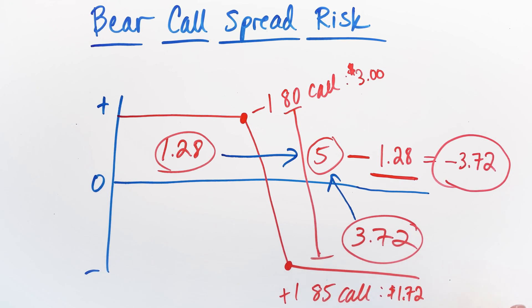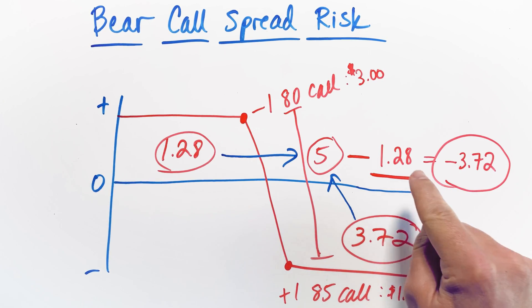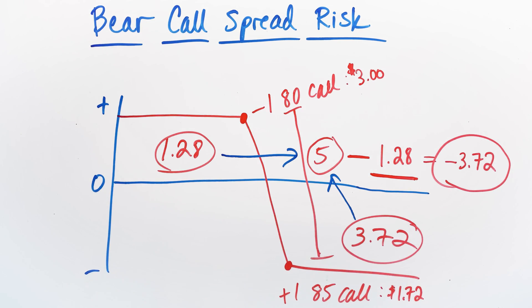If you are doing this by hand, this is the way that I suggest, which is taking the spread width, subtracting the net credit that you received, and that gets you your total risk on the single contract. Again, it's just like a double check. You just always want to add the total risk that you've calculated back to the net credit that you received on the contracts, and that should exactly equal the width of the spread that you're trading.